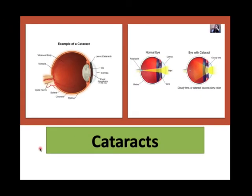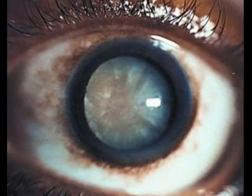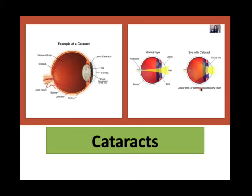Imagine gogo walks in from visiting the doctor and says: 'My children, I have a big problem — the doctor says I have cataract!' Gogo is in a state of panic, and we need to explain to her what cataract is. You tell gogo: the reason why you cannot see properly is because of this cataract the doctor is talking about. That cataract in your eye is preventing enough light from passing through your lens, which is affecting your vision.